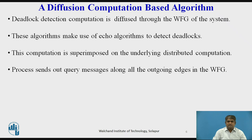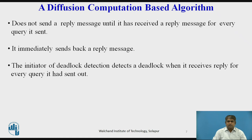To detect a deadlock, a process sends out a query message along all the outgoing edges in the wait-for graph. These queries are successfully propagated through the edges of the wait-for graph. When a blocked process receives the first query message for a particular deadlock detection initiation, it does not send a reply message until it has received a reply message for every query it sent. For all subsequent queries of this deadlock detection initiation, it immediately sends back a reply message.